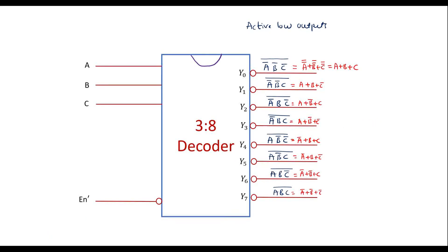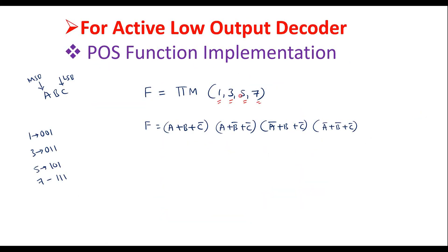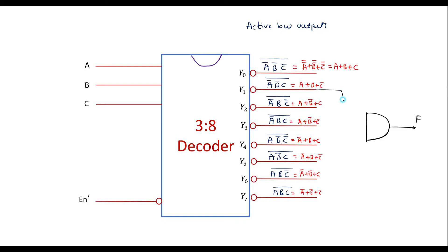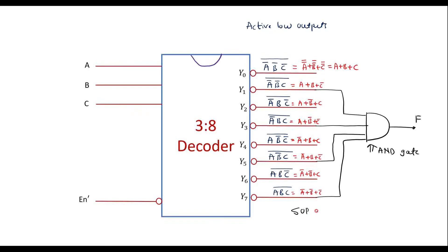We must use an AND gate. Connect lines 1, 3, 5, and 7 to the AND gate, and the output is f. The conclusion is: when implementing Boolean functions using an active low output decoder, for SOP functions use a NAND gate, and for POS functions use an AND gate. Simply connect the min terms or max terms to the corresponding gate, and its output will generate the same function. Thank you for watching. Stay tuned.